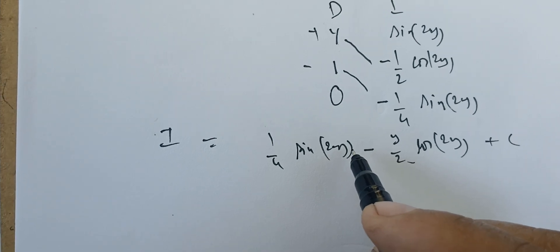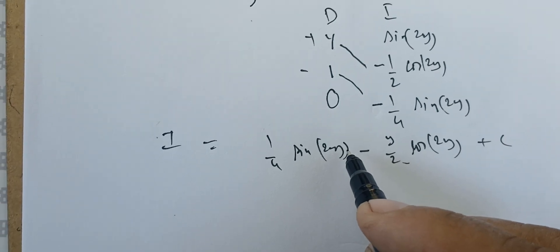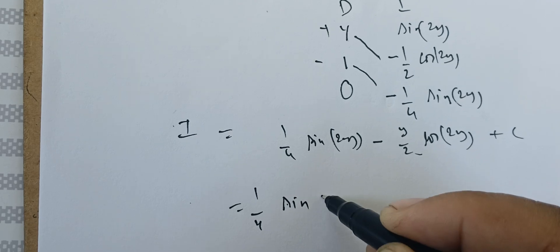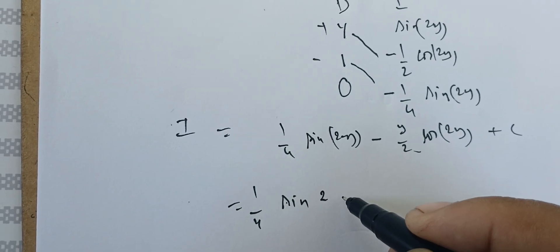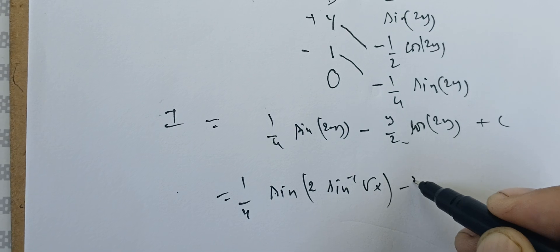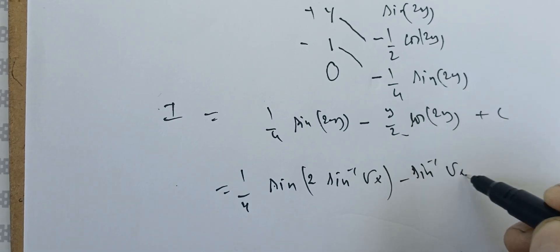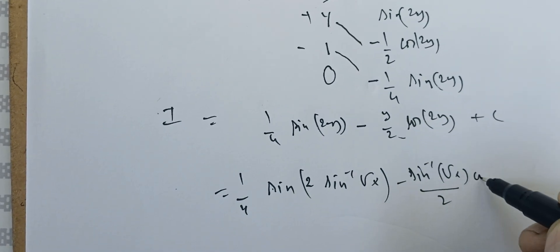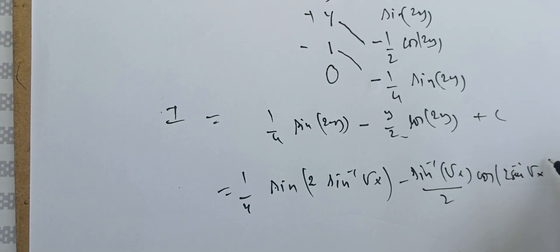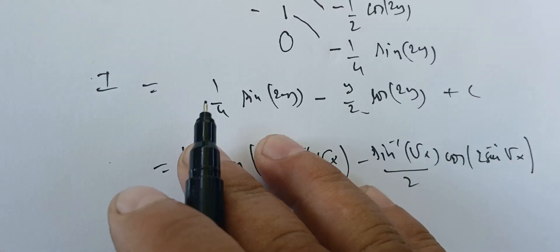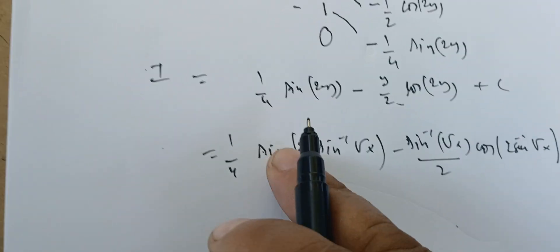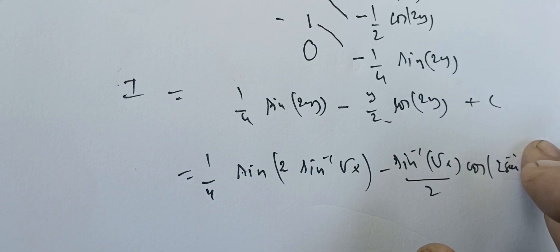Now we need to replace y with sin⁻¹(√x). So I becomes: (1/4)sin(2·sin⁻¹(√x)) - (sin⁻¹(√x)/2)·cos(2·sin⁻¹(√x)) + C. We will need to simplify these expressions.